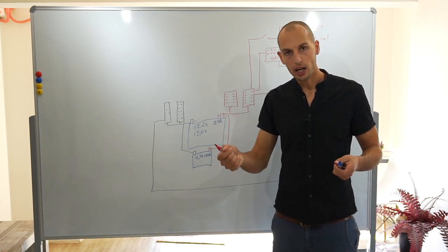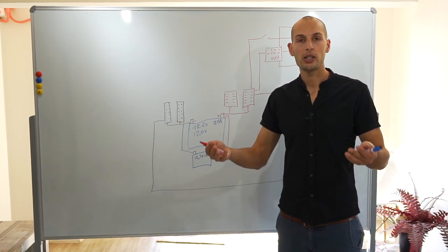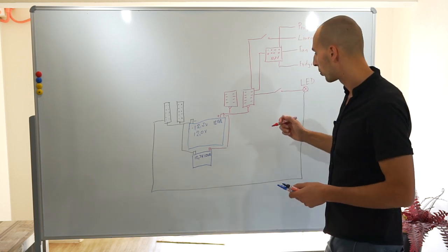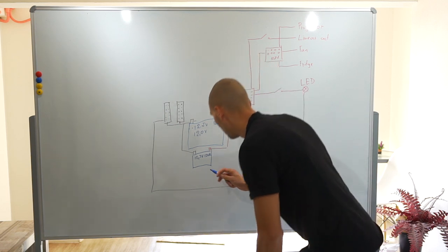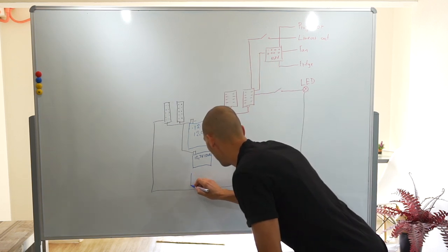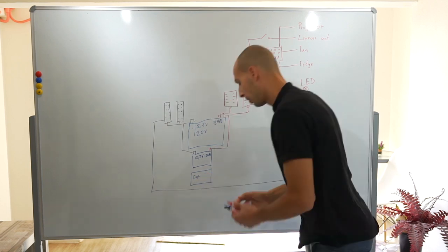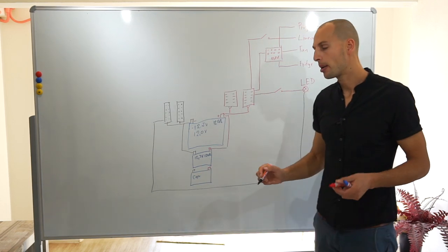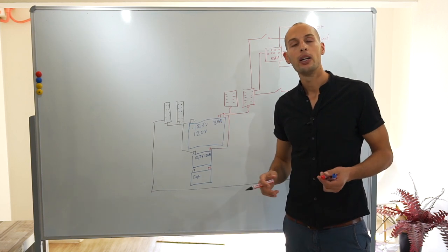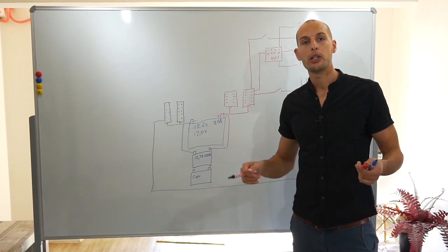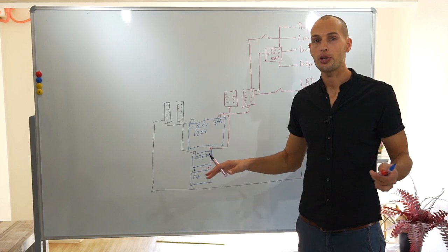That means when you turn the car on, it automatically starts charging. So let's imagine we have this battery. That is your car battery. So imagine what happens if you wire them exactly like this, like the second battery. Imagine what happens. When you turn the engine on, it starts charging. Amazing.